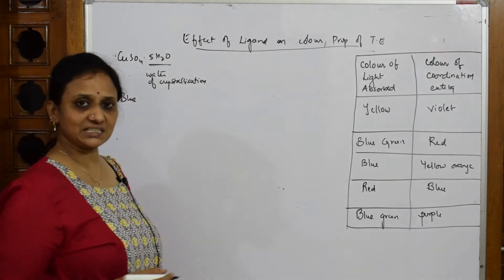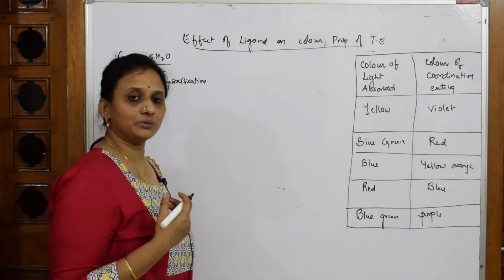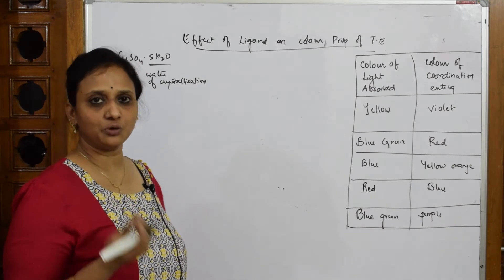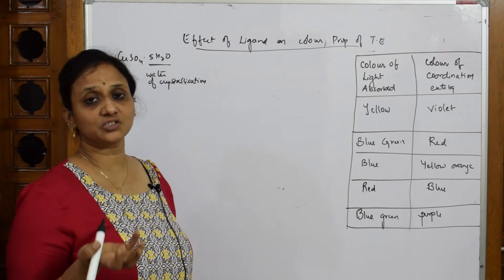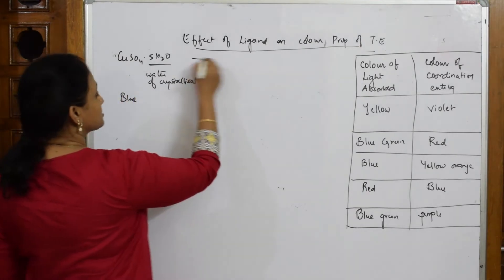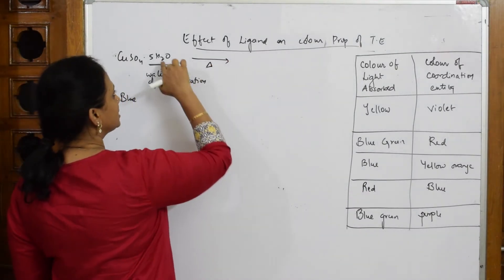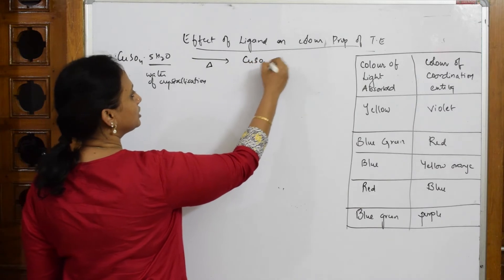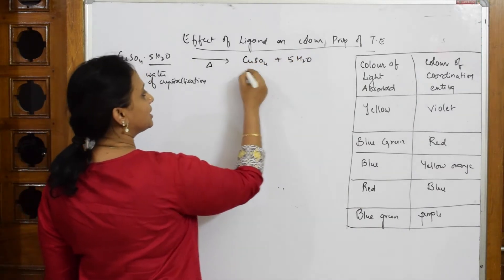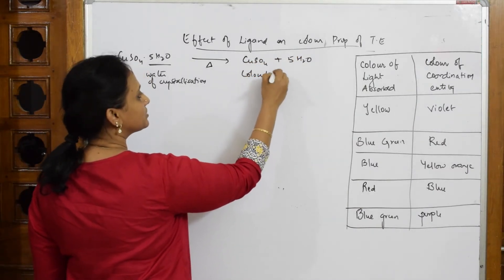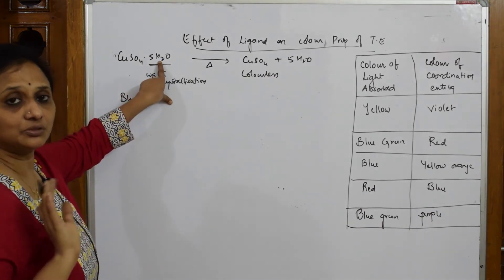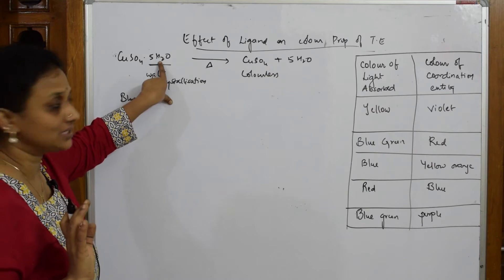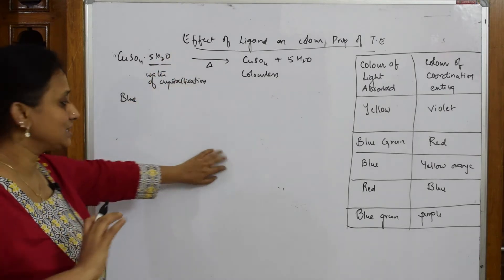Now suppose when you heat it, you find some moisture coming out of the test tube. And finally, you find copper sulfate which remained as a white colored salt in the test tube. When you heat it, this loses those five water molecules and it has become colorless. What are you observing? The presence of the ligand is imparting color to the copper sulfate crystal.